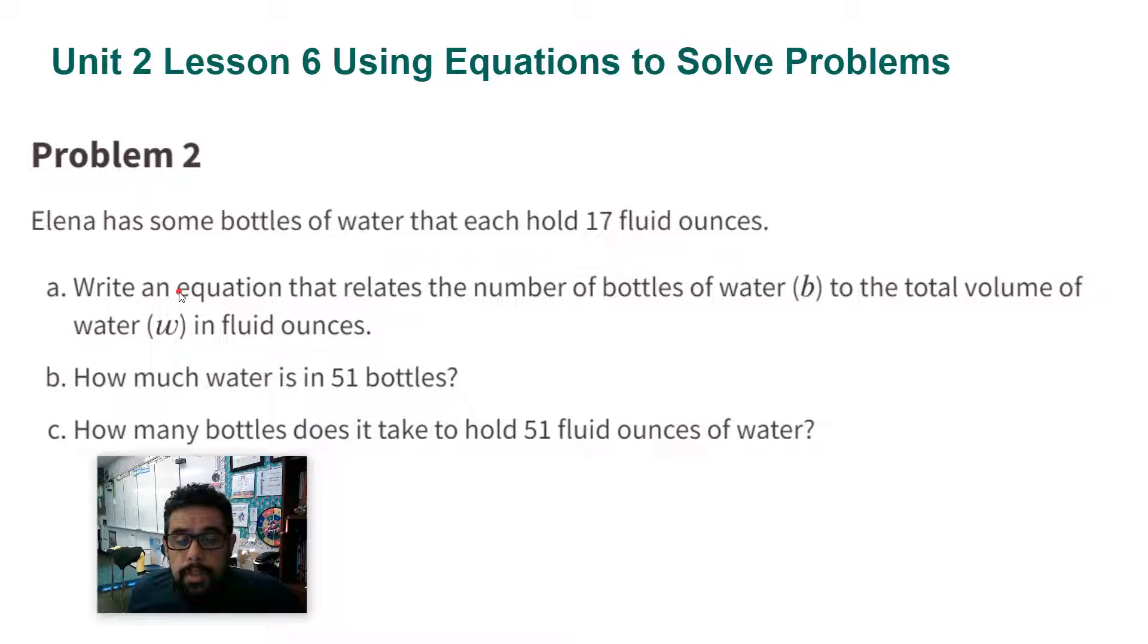Part A: Write an equation that relates the number of bottles of water, B, to the total volume of water, W, in fluid ounces. So we're going to use this part right here. One bottle holds 17 fluid ounces. This is the constant of proportionality.